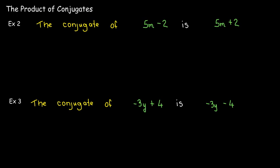Now, our next special product is the product of conjugates. Well, what are conjugates? Again, we're still talking about binomials. So the conjugate of 5m minus 2 is 5m plus 2. All right, so it looks very similar, just a slight change.